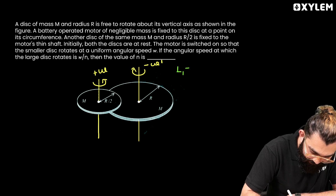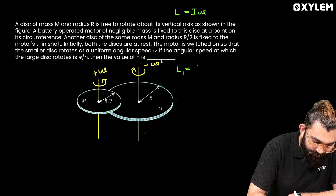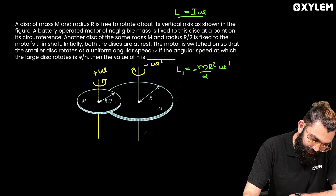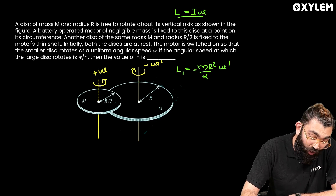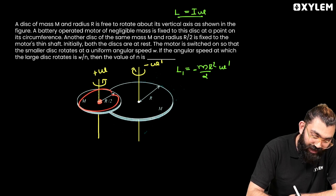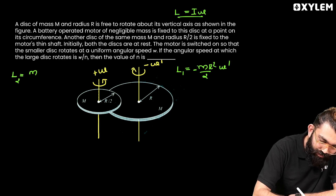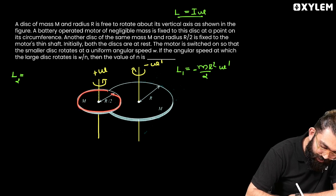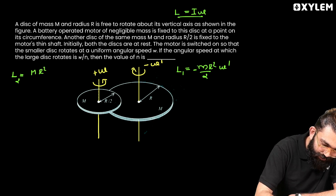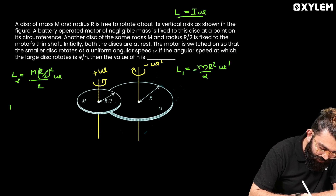The angular momentum of the larger disc is L1 = I × omega_dash. The moment of inertia of the larger disc is MR²/2, so L1 = −MR²/2 × omega_dash (negative, since it rotates in the opposite sense). The spin angular momentum of the smaller disc is L2 = m(R/2)²/2 × omega = mR²/8 × omega, which is positive.